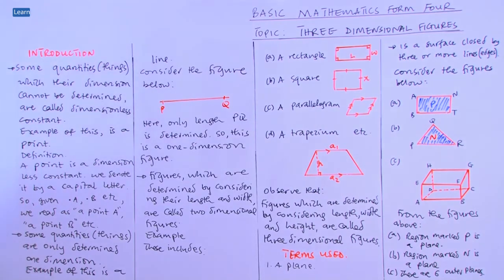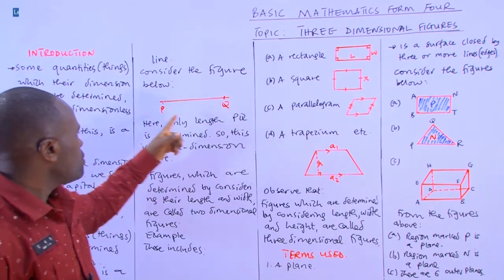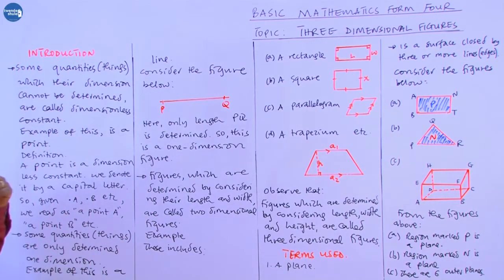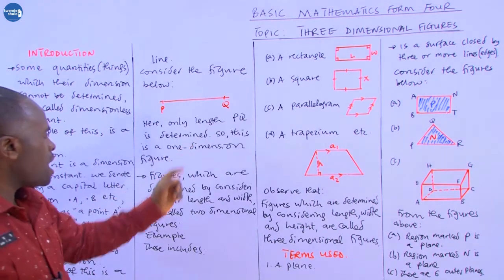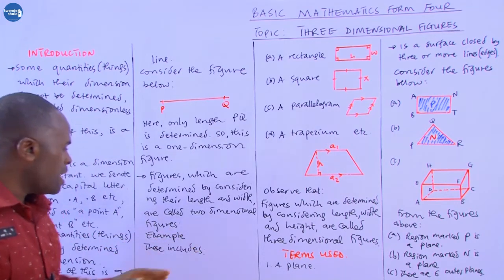Some things are determined by looking at only one dimension — we consider them as one-dimensional figures. For example, a piece of line is only determined by looking at its length from one end to the other. Only length is determined, so a line is simply a one-dimensional figure.